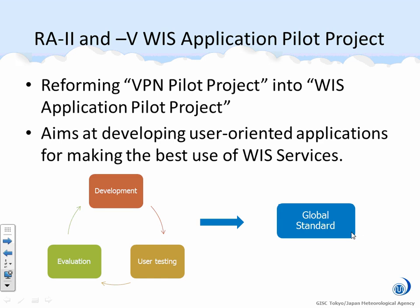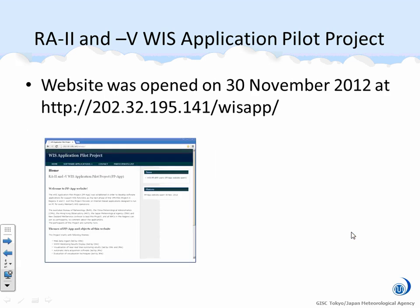From now, I want to talk about the WIS application pilot project. The VPN pilot project was reformed to the WIS application pilot project last year, 2012. The project aims at developing user-oriented applications for making the best use of WIS services. JMA set up a website for this WIS application pilot project in November 2012, to make participants familiar with WIS applications led by JMA, and to invite members of the project including all national meteorological centers in the region as new test users through the website.